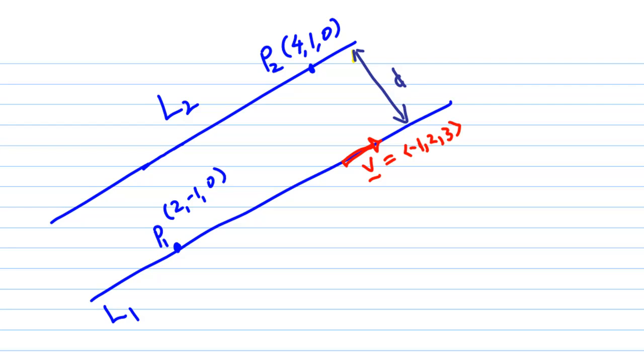Now, how do I find this distance? The way to find this distance is like this. I join P1 and P2. Let's say the angle here is theta. This is the angle between P1P2 and the direction of the line.